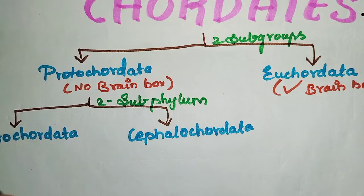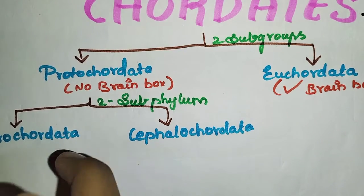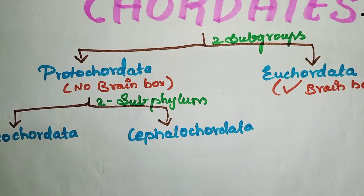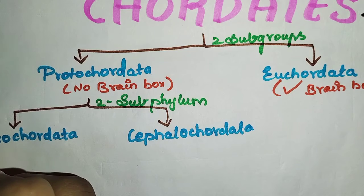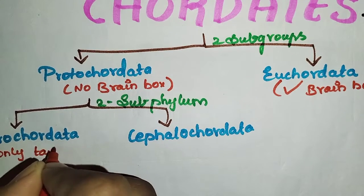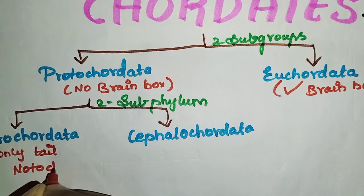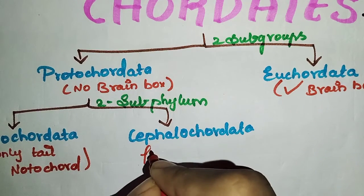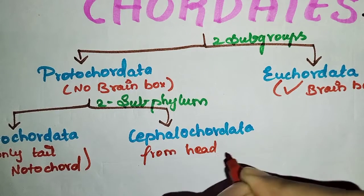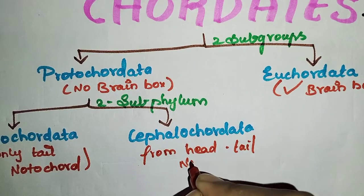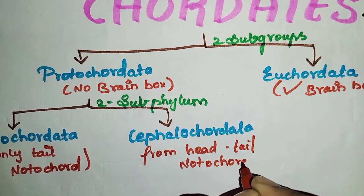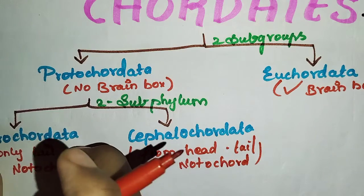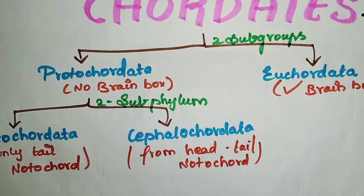In Urochordata, the notochord is present only during the larval stage in the tail region. In Cephalochordata, the notochord is present from head to tail throughout the entire life span. So on the basis of notochord extent, they are classified into Urochordata and Cephalochordata.